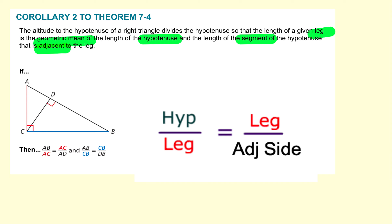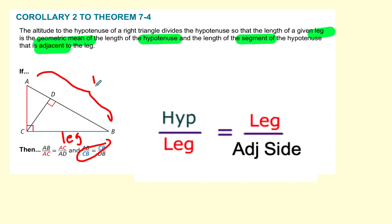The theorem says that if we work with the other leg CB, this leg will be the geometric mean between the whole hypotenuse and the part of the hypotenuse — the side of the hypotenuse adjacent to the leg.